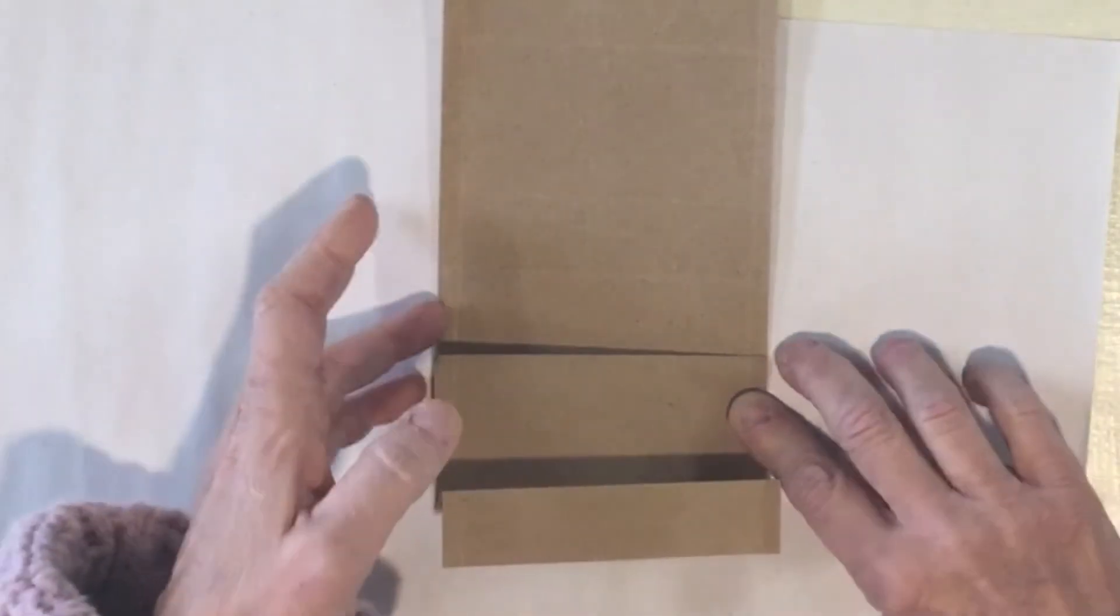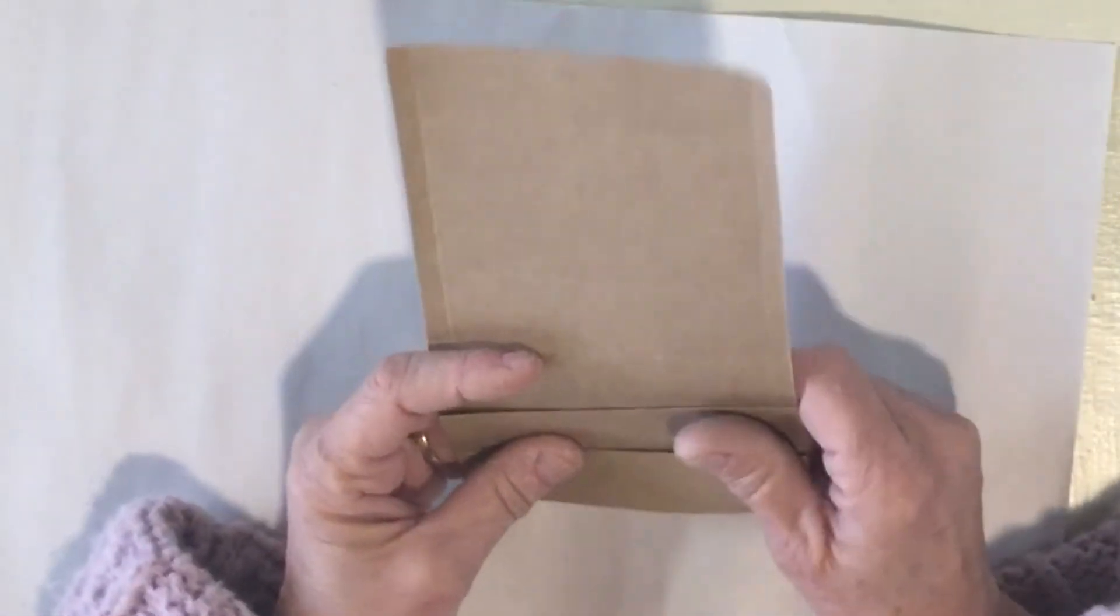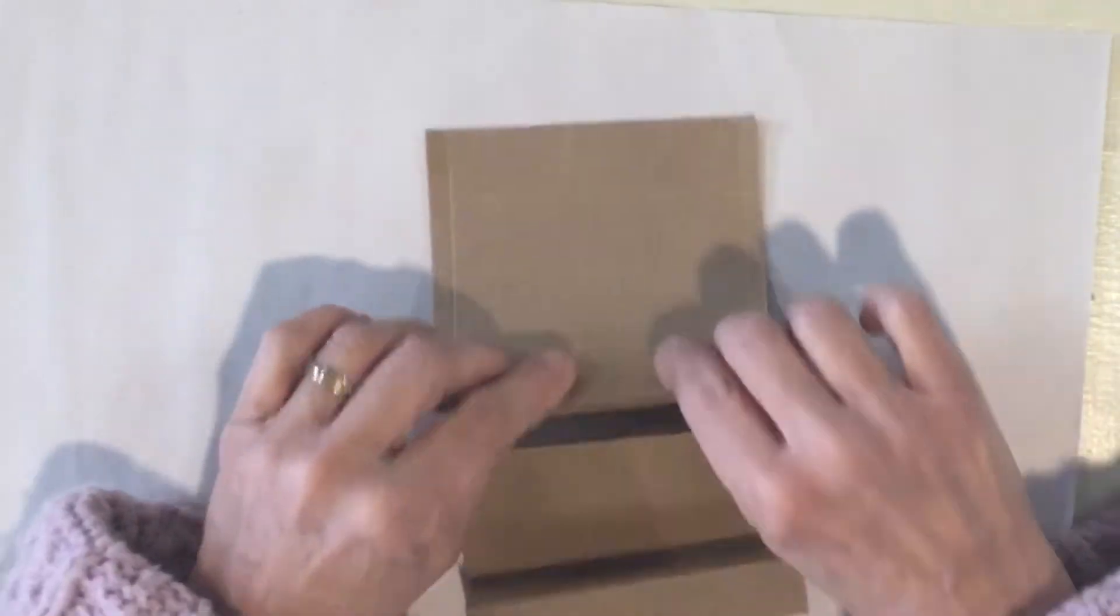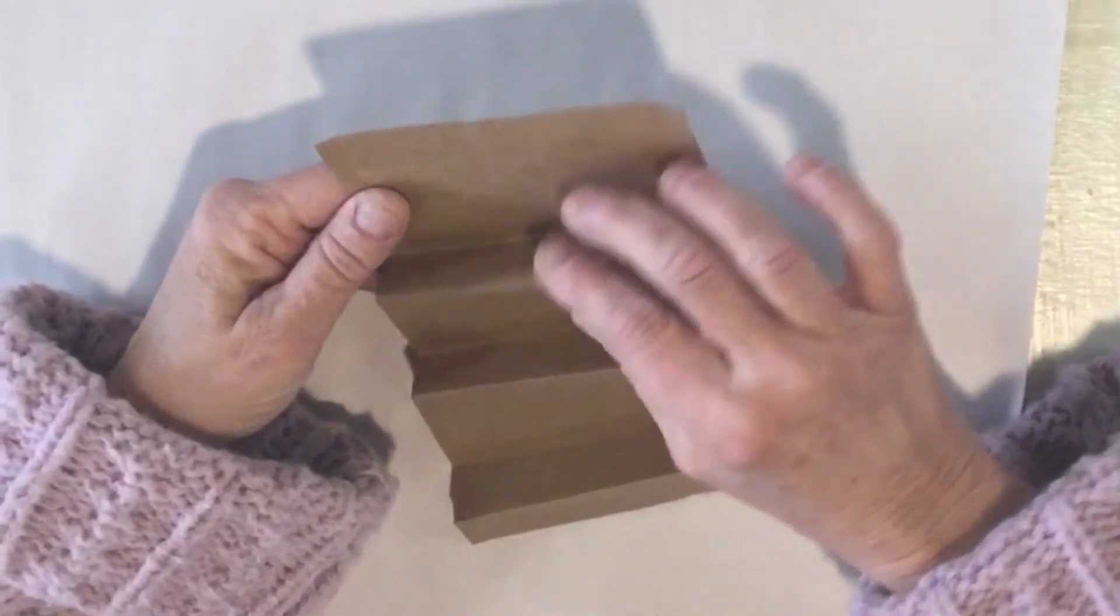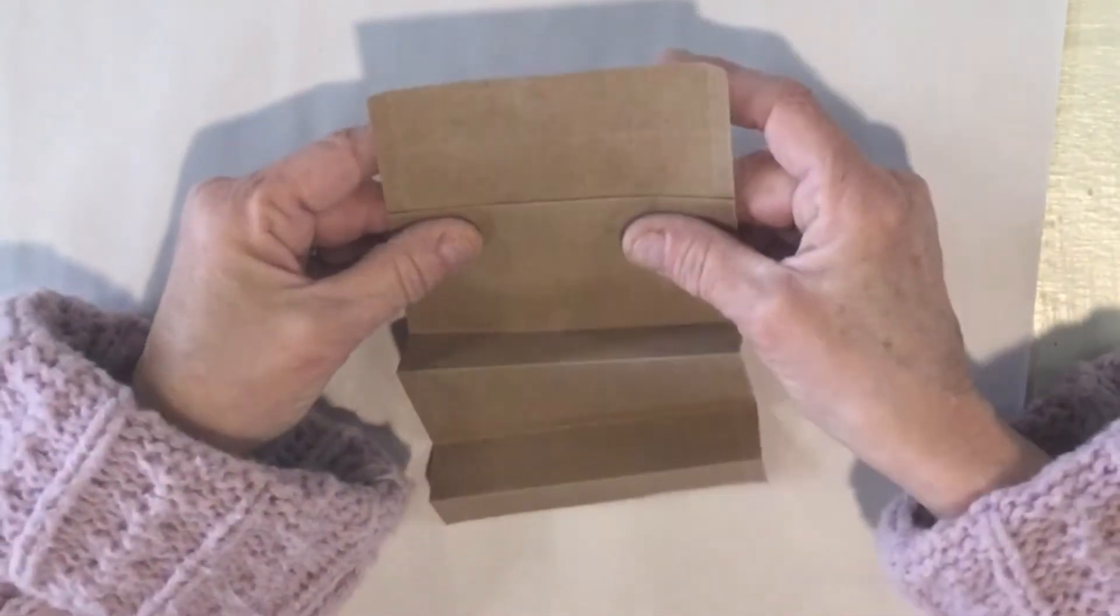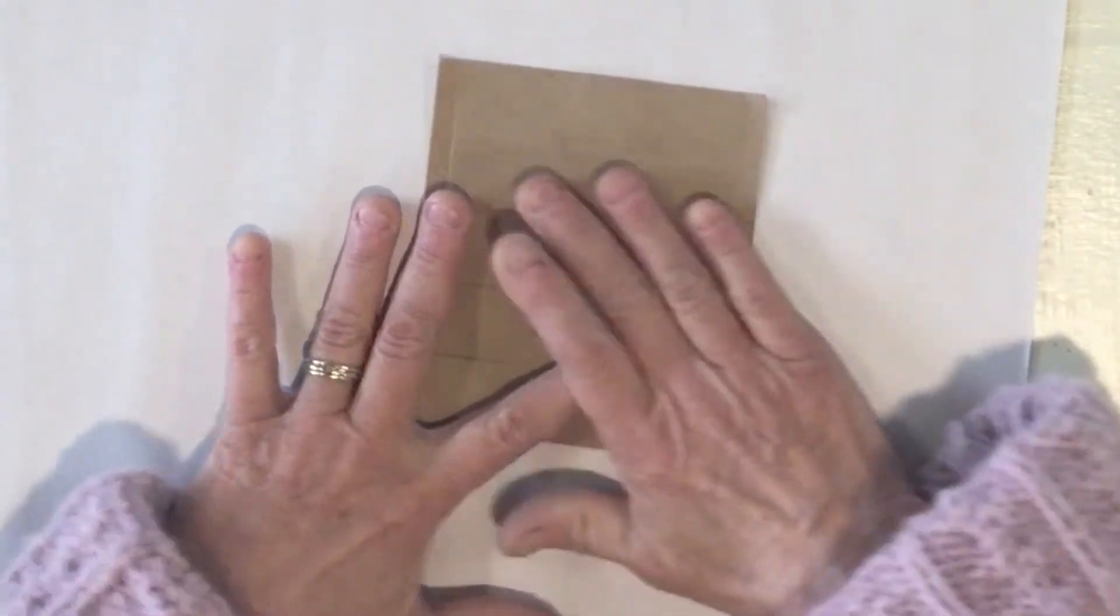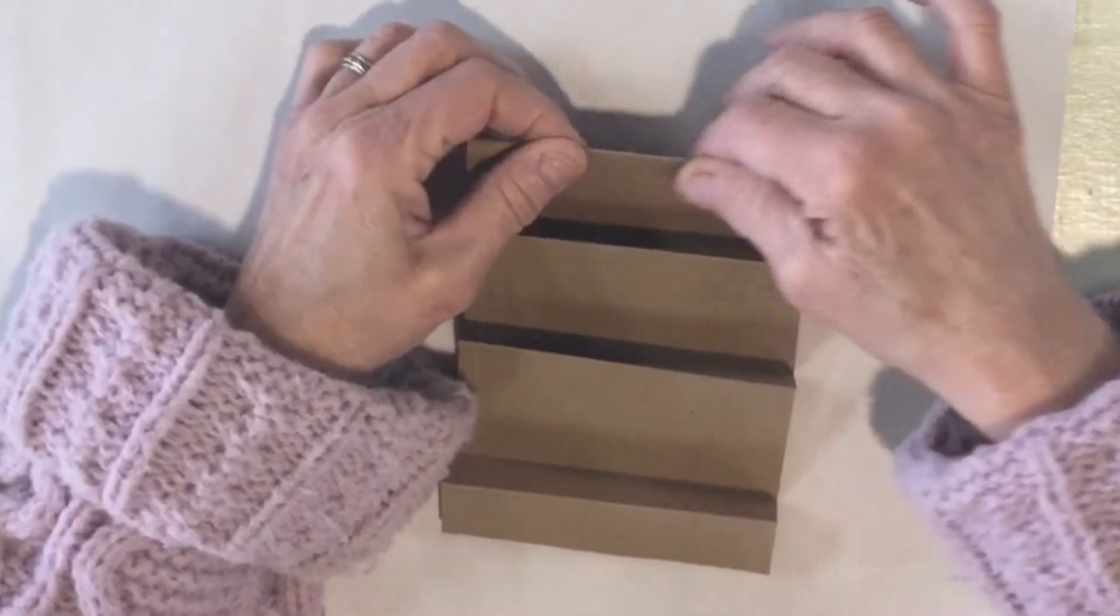So really what we're doing is an accordion fold. After we fold this, you're going to see these one-inch strips are hidden and the two-inch strips are what are showing to the front. This last one-inch strip I'm going to fold back and it will be hidden behind also.